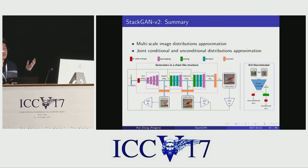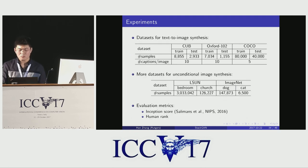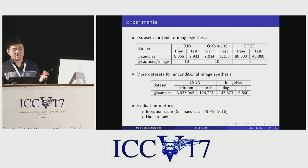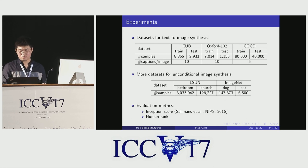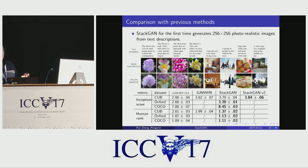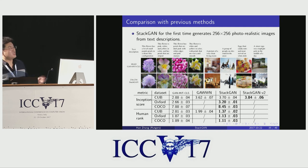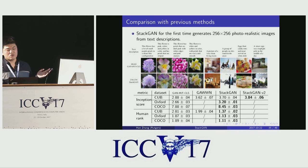To sum up, StackGAN2 is an end-to-end learning framework that jointly models multiple distributions, adding more regularizations and thus generating better samples. We validated our method on text-to-image generation on three benchmark datasets, and also generalized it for unconditional image generation to generate bedrooms, churches, dogs, and cats. For evaluation, we adopt the Inception Score and Human Rank as evaluation metrics. Our StackGAN2 achieves state-of-the-art results on all three datasets for text-to-image generation, and for the first time generates 256 by 256 photorealistic images from text descriptions.